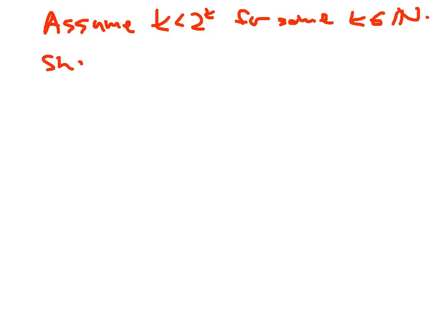Now remember, I'm just going to write down we are assuming, just to remind myself, we are assuming that k is less than 2 to the k for some positive integer k. And so now we want to show that k plus 1 is less than 2 to the k plus 1.